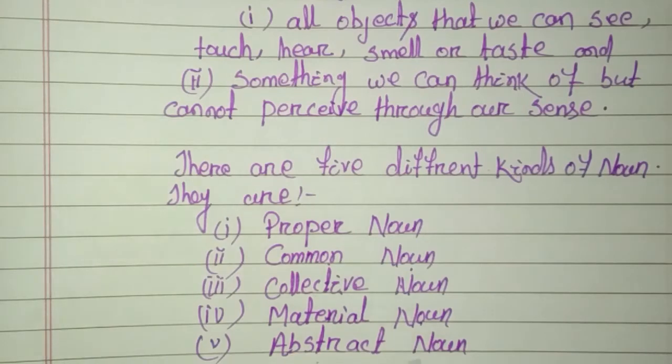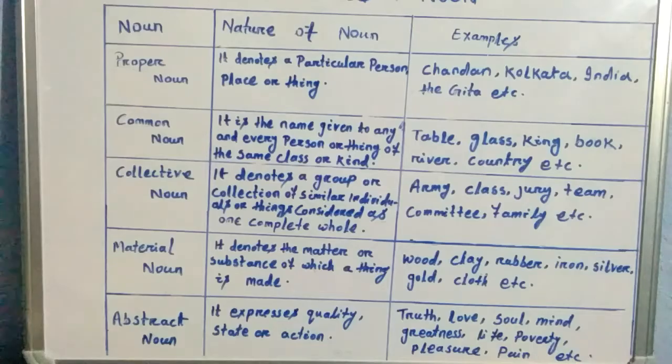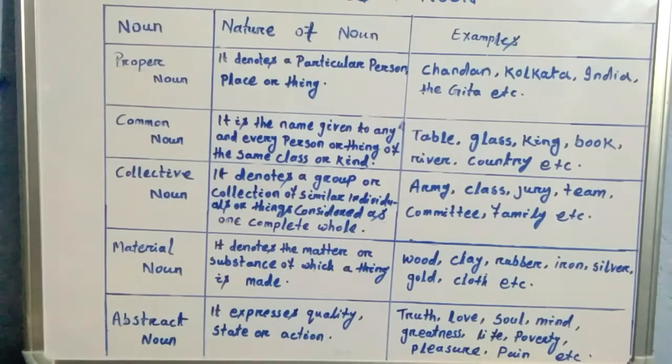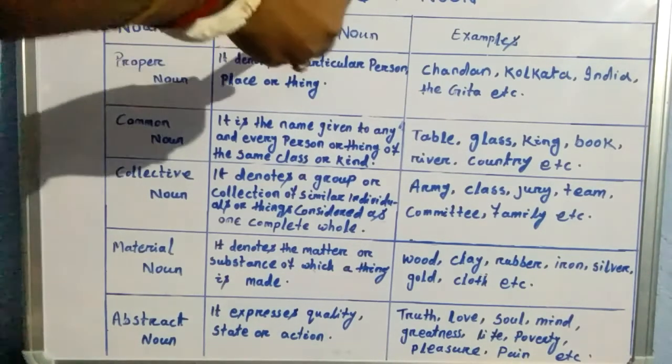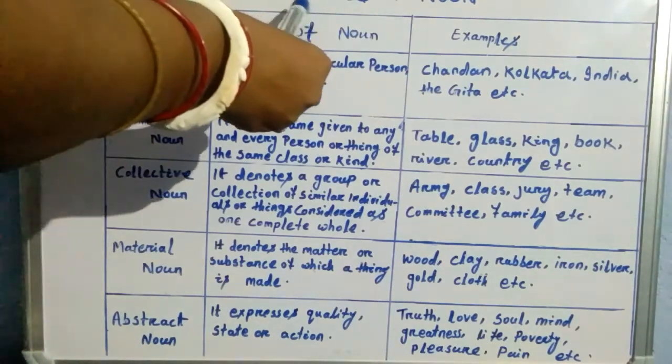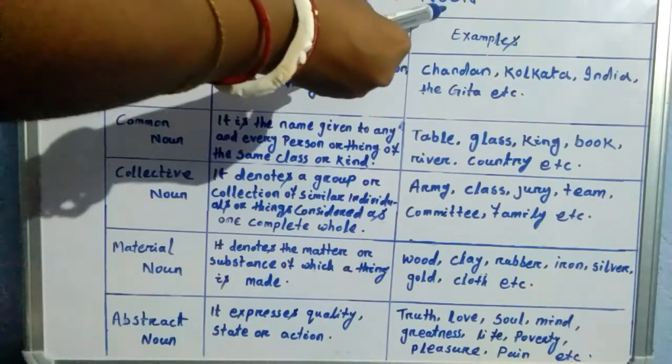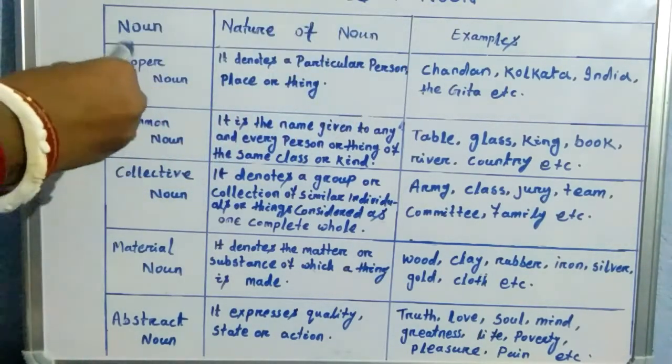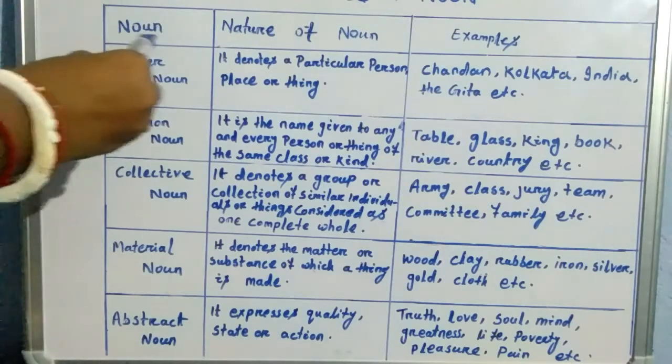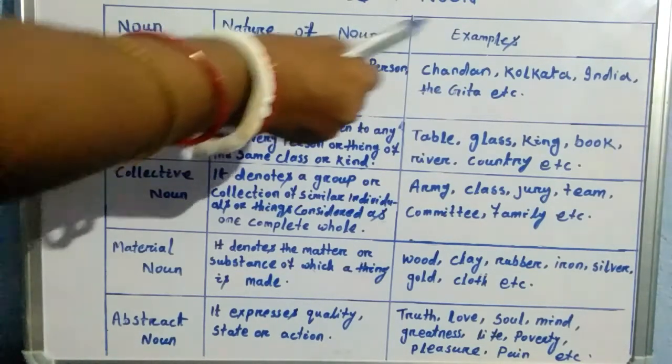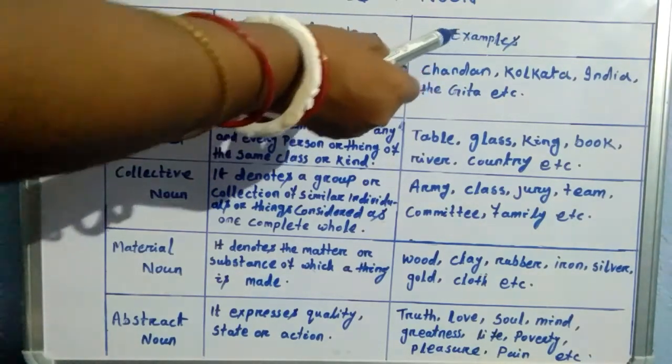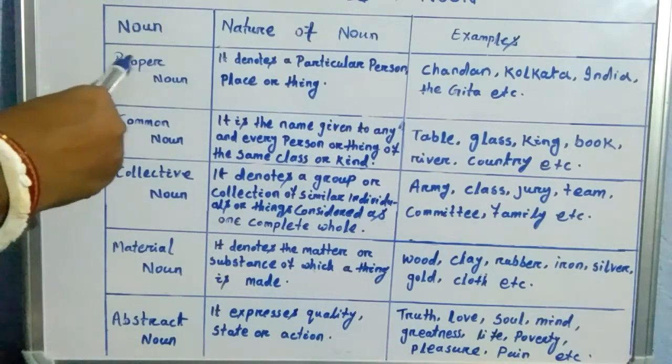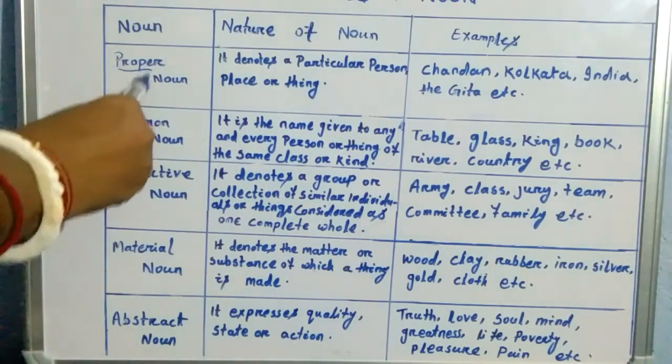So students, here I have a table to make you clear understand about the kinds of noun. Here I have written noun, nature of noun, then examples of this kind of noun. So first one is proper noun.